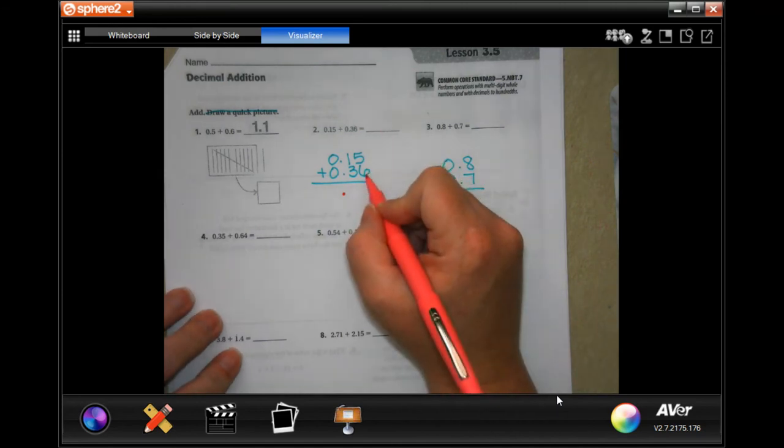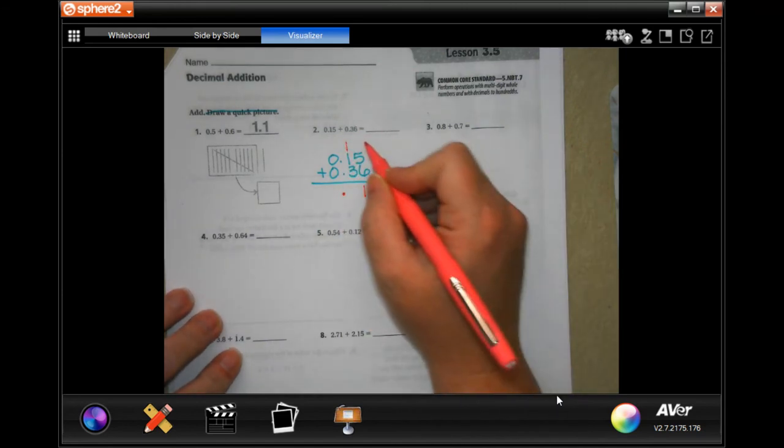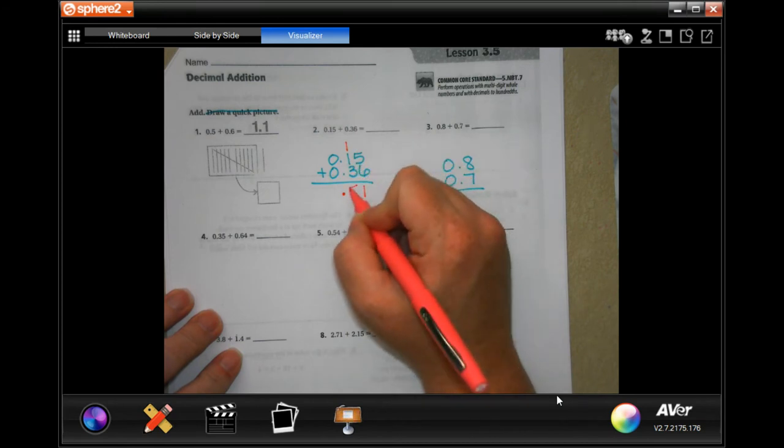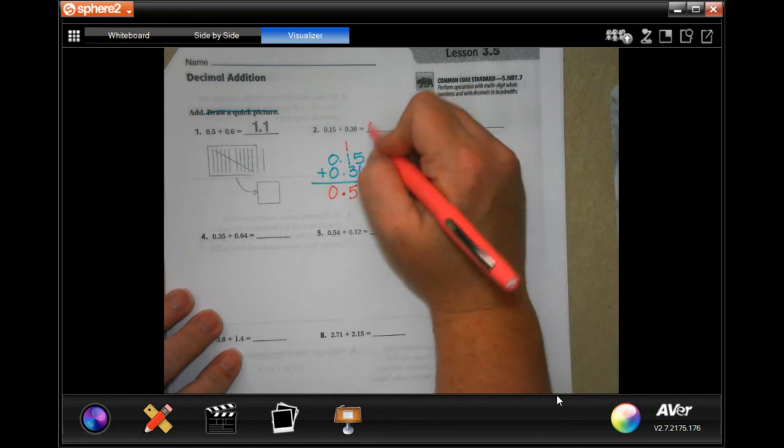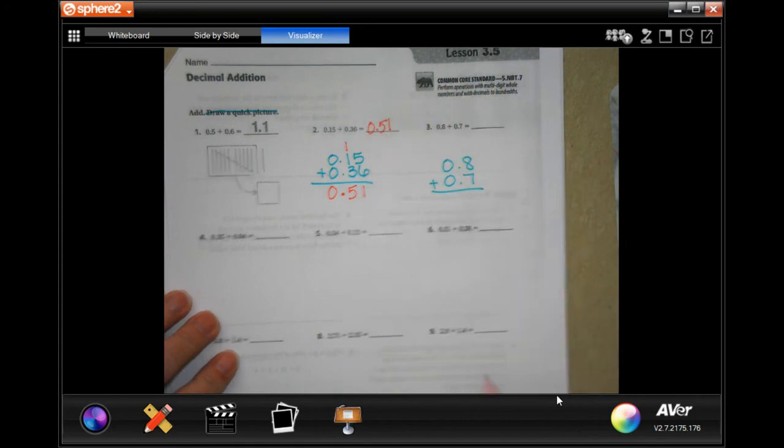Now, five plus six is eleven. We're going to carry our one. One plus one is two, plus three more is five, and zero plus zero is zero. That's your answer. Zero point five one.